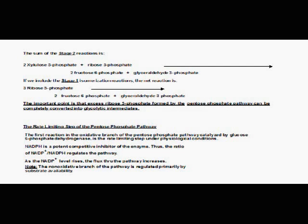The rate-limiting step of the pentose phosphate pathway is the first reaction of the oxidative branch, catalyzed by glucose-6-phosphate dehydrogenase, under physiological conditions. NADPH is a potent competitive inhibitor of the enzyme. Thus, the ratio of NADP+ to NADPH regulates the pathway. As the NADP+ level increases, the flux through the pathway increases. The non-oxidative branch of the pathway is regulated primarily by substrate availability.